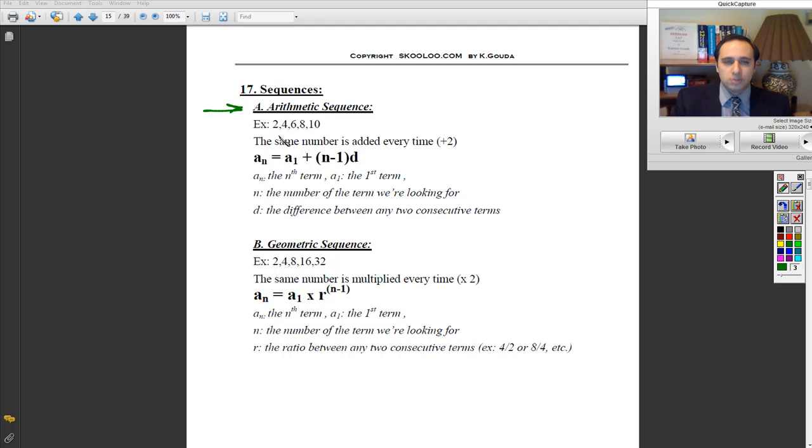then it's obvious that you're adding a 2 after each term. 2 plus 2 is 4, 4 plus 2 is 6, 6 plus 2 is 8, 8 plus 2 is 10. So the same number is added every time, plus 2.